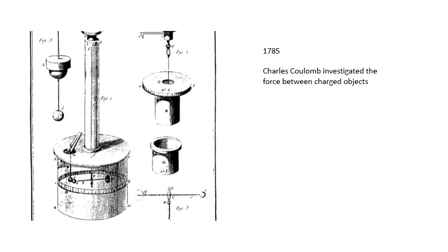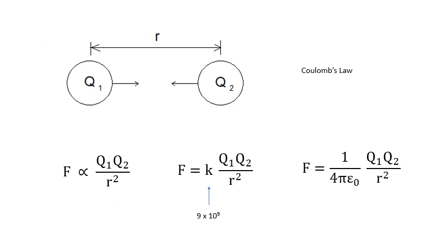So, 1785, Charles Coulomb investigated the force between charged objects. You remember that Cavendish used a thing called a torsion balance to measure the force between masses, and Coulomb did a very similar thing measuring the force between charges, electrostatic forces.